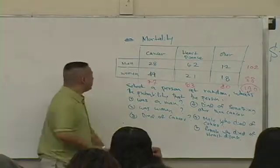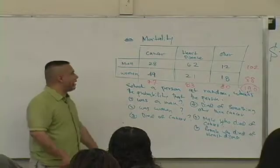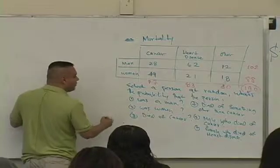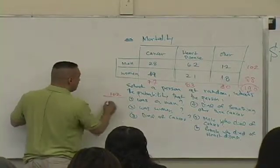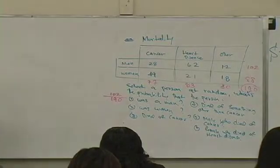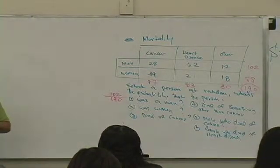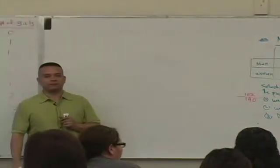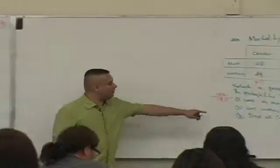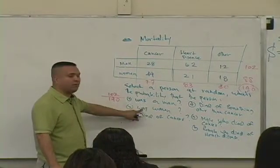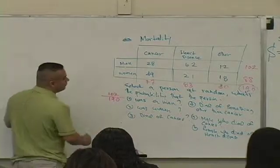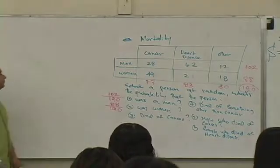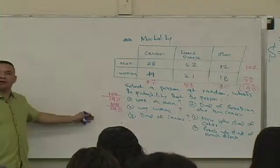So let's see. The first question. What's the likelihood that the person was a man? What does that mean? How many men are in the table? 102. How many people are in the table? 190. You guys okay with that? The likelihood that you select a woman. What is it? 88 over 190 as well. Of course, you reduce these fractions, or you approximate this to a decimal.